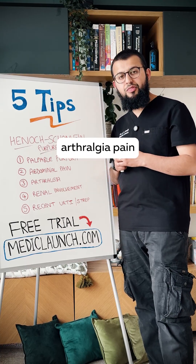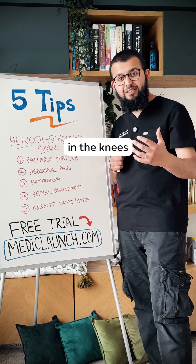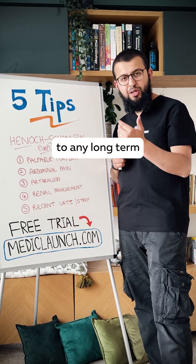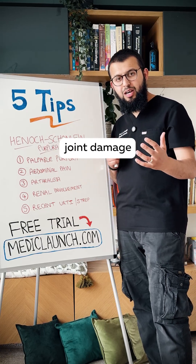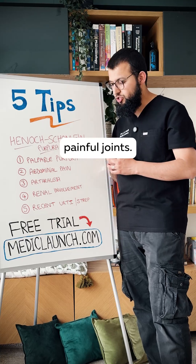The third sign is arthralgia — pain in the ankles, pain in the joints, pain in the knees. It's often transient and it doesn't lead to any long-term joint damage, but it does present with painful joints.